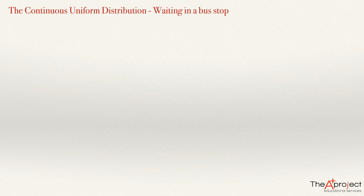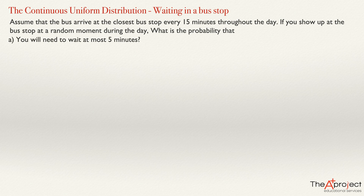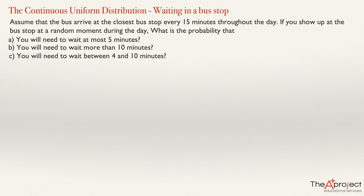Let's solve another problem related to the continuous uniform distribution. Assume that the bus arrives at the closest bus stop every 15 minutes throughout the day. So the bus arrives now and then 15 minutes later arrives again and so on. If you show up at the bus stop at a random moment during the day, what is the probability that: (a) you will need to wait at most five minutes, (b) you will need to wait more than 10 minutes, and (c) you will need to wait between 4 and 10 minutes.